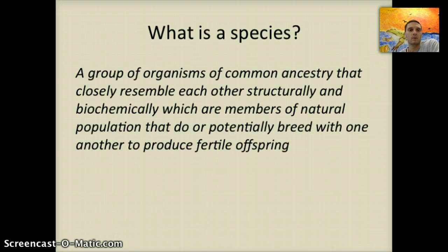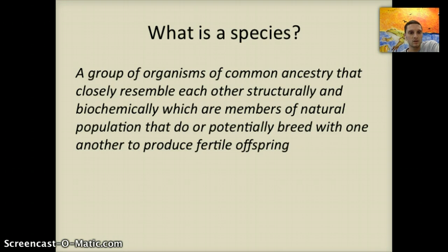A species, if we want to give it a definition, is a group of organisms of common ancestry that closely resemble each other structurally and biochemically in terms of their DNA, and are members of a natural population that — and this is the key part — do or have the ability to breed, to reproduce, and have one or more fertile offspring. What makes a species unique is that members of the same group or population are able to breed and have reproducing offspring.